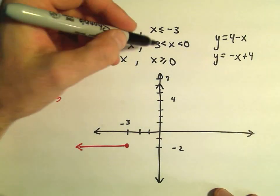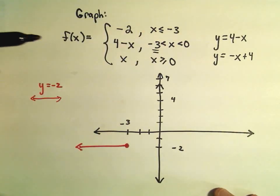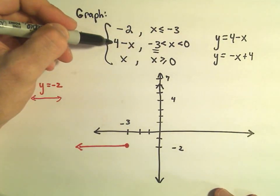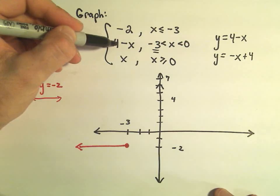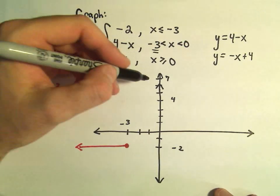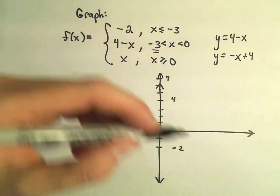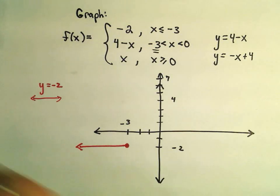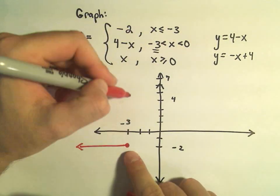Again, what I do, I always just plug in the endpoints. So if I were to plug negative 3 into this, I would get 4 minus negative 3, or 4 plus 3, which would give me 7. But since it's not including negative 3, I'm going to put an open circle up there.